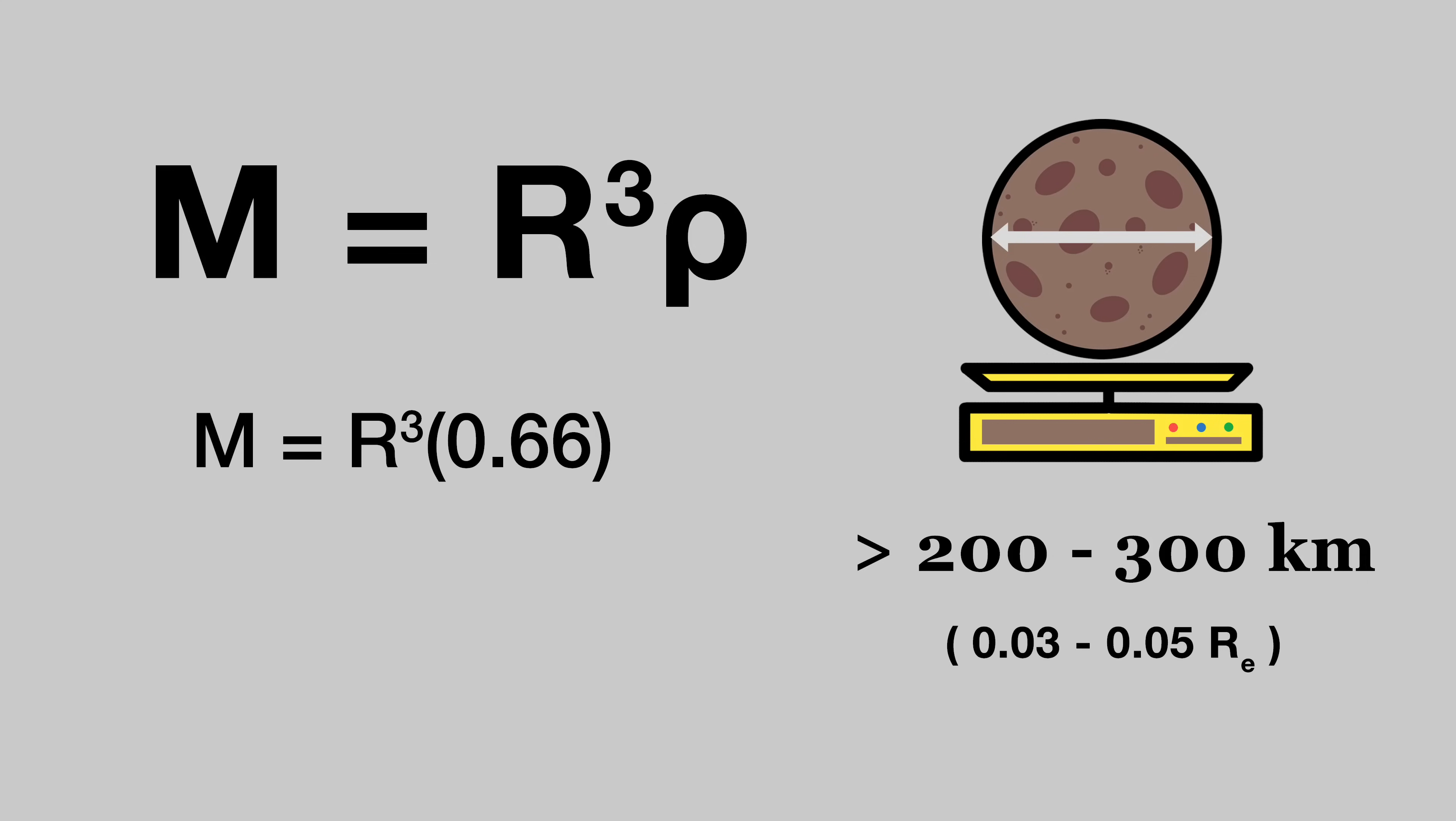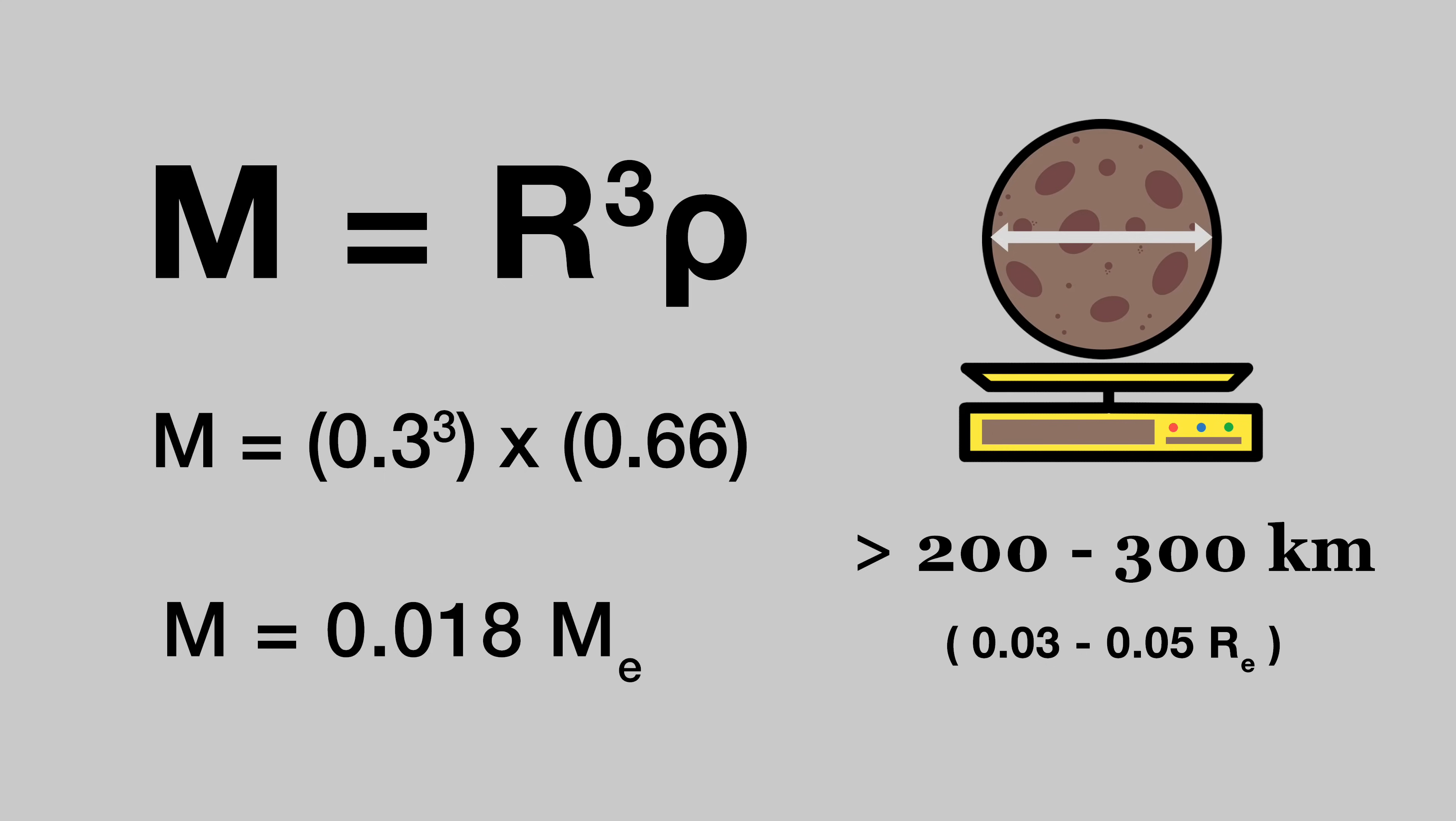Let's say our moon would be just under a third the size of Earth, which gives us a mass of 0.018 Earth masses. This makes it slightly more massive than Earth's moon, which is perfect.